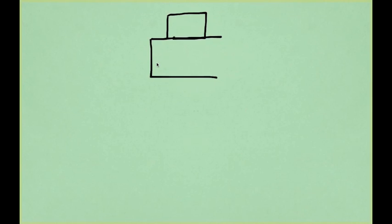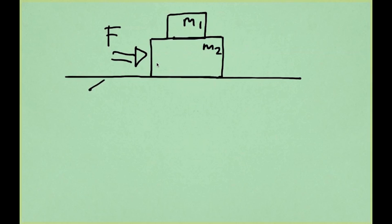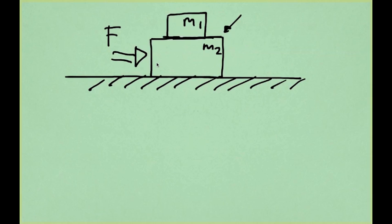Let's work on an example problem involving two blocks, one stacked on top of the other. M1 is on top, M2 is at the bottom. We apply a force to the bottom block. There is no friction between M2 and the floor, but there is friction between M1 and M2.